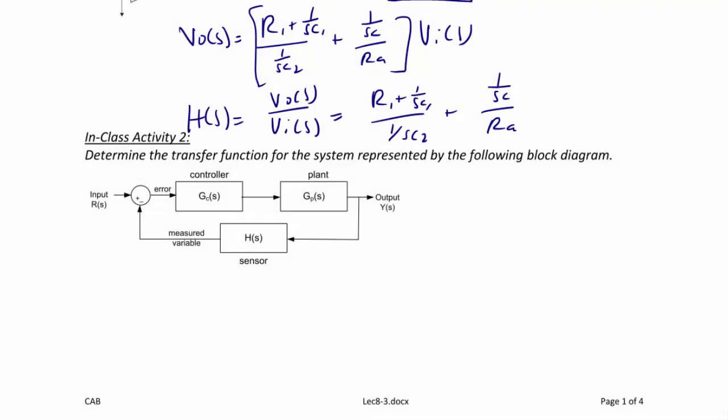Now let's do In-Class Activity 2: determine the transfer function for the system represented by the following block diagram. This block diagram is a standard feedback control system, where we have an input R(S) and we would like the output to track the input. Coming out of the summer with plus and minus, we have an error E(S), then we design a controller to control the plant, where the plant could be anything from a thermostat to a car to your body temperature. The output is Y(S), and in the feedback loop you sometimes have a sensor to detect how close it is to the actual value.